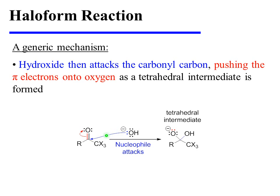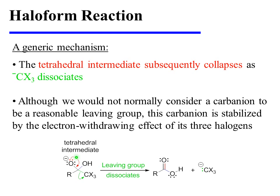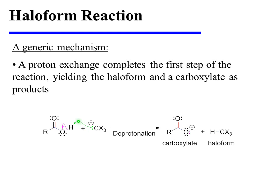Hydroxide then attacks the carbonyl carbon, pushing pi electrons onto oxygen. A tetrahedral intermediate is formed in the process. The tetrahedral intermediate subsequently collapses as the tri-halomethyl carbanion dissociates. Although we would not normally consider a carbanion to be a reasonable leaving group, this particular carbanion is stabilized by the electron withdrawing effect of its three halogens. A proton exchange completes the first step of the reaction, yielding the haloform as well as a carboxylate as products.